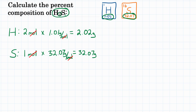Next, we want to find the molar mass for H2S. To do that, we're going to add up our two masses: 2.02 plus 32.07 is 34.09. That's the molar mass for H2S.